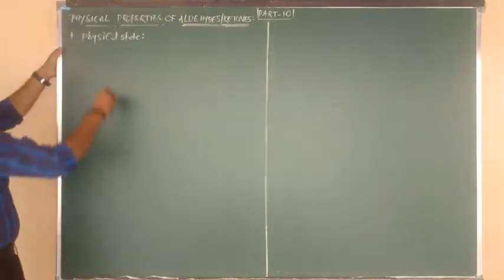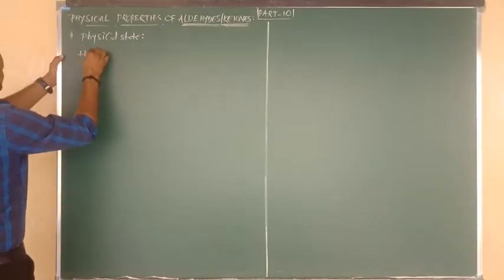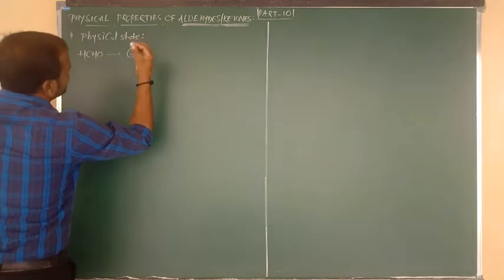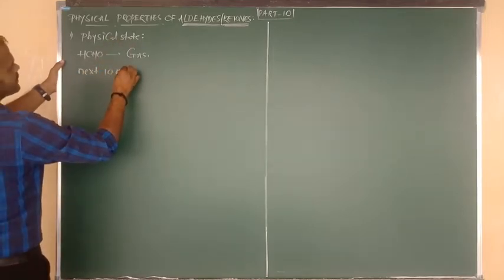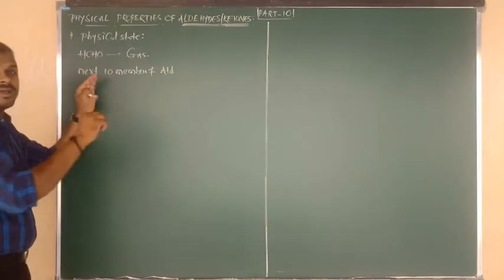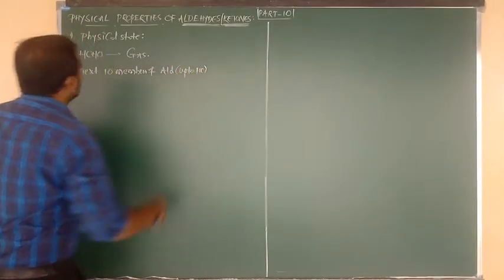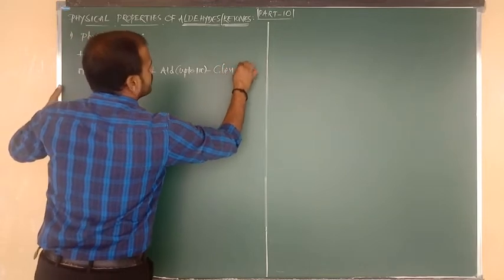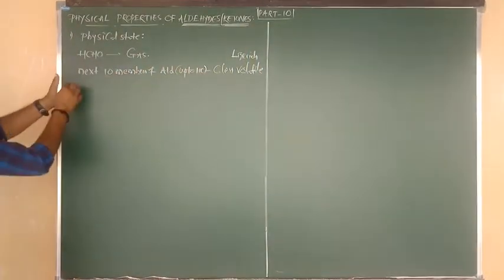First, about the physical state of aldehydes. The first aldehyde is formaldehyde, whose formula is HCHO. Formaldehyde is a gas. Other aldehydes — from acetaldehyde up to 11 carbons — are all colorless volatile liquids.